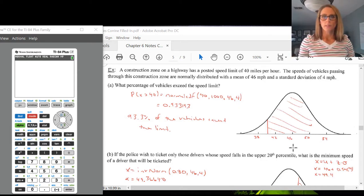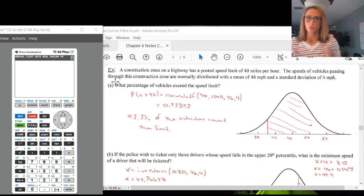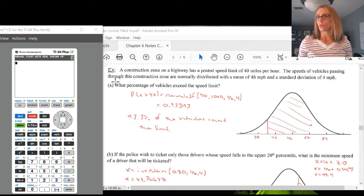We're going to look at this example here. We have a construction zone. The speed limit is 40 miles an hour. But they take a look at a bunch of cars that go by, find that their speeds are actually normally distributed, but the mean is 46 miles per hour and the standard deviation is 4 miles per hour.